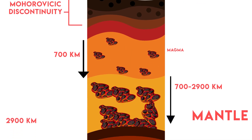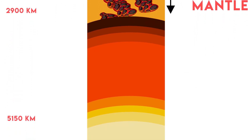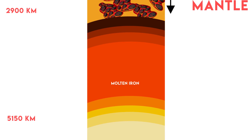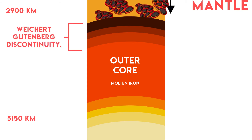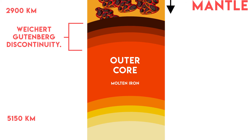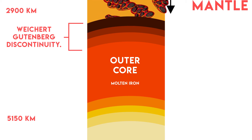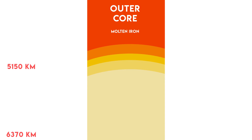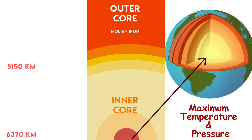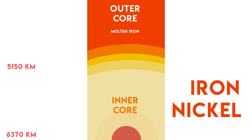Depth from 2900 km to 5150 km is molten iron, which is also known as the outer core. Outer core and mantle are separated by the Wiechert-Gutenberg discontinuity. The innermost part, which spans from 5150 km to 6370 km, is called the inner core. At 6370 km, you will reach the center of earth where temperature and pressure is extreme. Inner core is solid and made of iron and nickel metals.